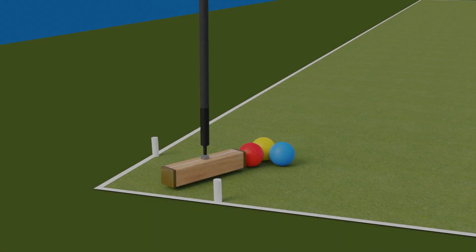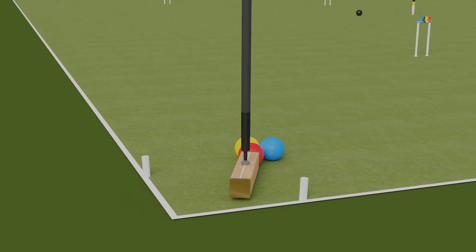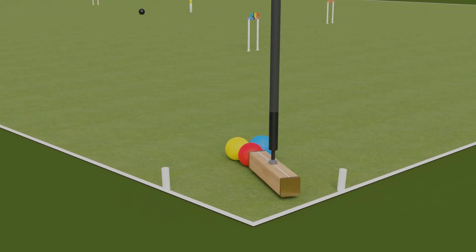A cannon is a shot which is really two shots in one. It croquets one ball and immediately roquets the next, all in one stroke.